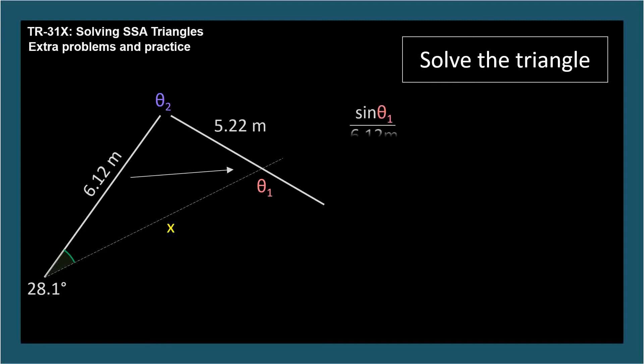So we have sine theta sub 1 over 6.12. By the way, like I keep saying, when we use the law of sines, it's a good practice to put the unknown variable in the numerator of its fraction, so with your calculator you can solve for the variable in one step. Here's what I mean. Sine theta 1 over 6.12 meters equals sine 28.1 degrees over 5.22 meters.